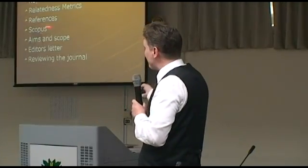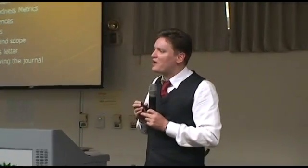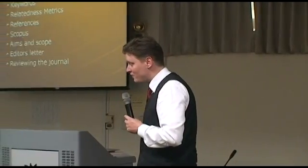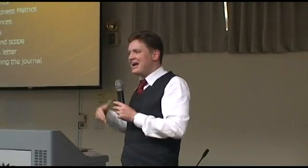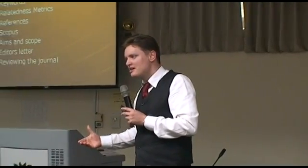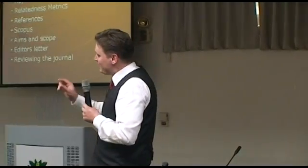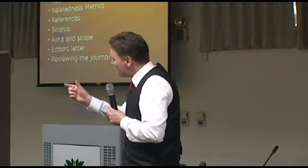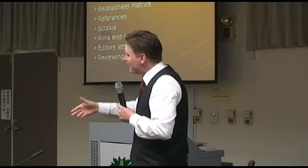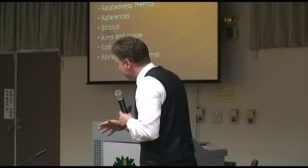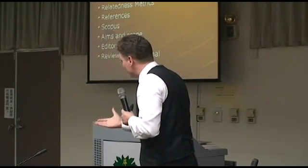We will also look at our references — where have our references published? If they published there, maybe we can publish there as well. But sometimes the papers we cite are in very high-impact journals. In that case, we take the name of the reference author and go to Scopus or Google Scholar to see where else he published before. He's in our domain, he's close to us, so if he published in a certain journal, maybe we can too — we can follow in his footsteps.